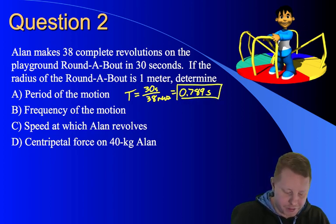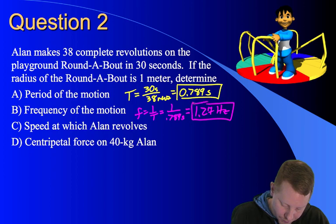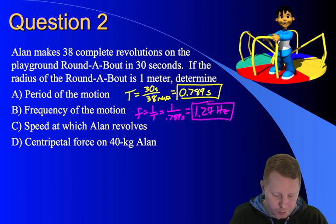Next, we're asked to find the frequency. And once we know period, of course, frequency is just the inverse of that. So frequency is one over period, or one over 0.789 seconds, which becomes about 1.27 hertz.